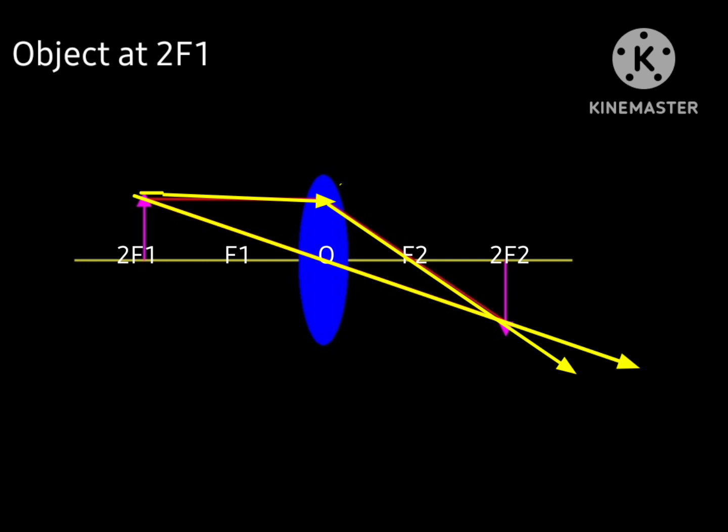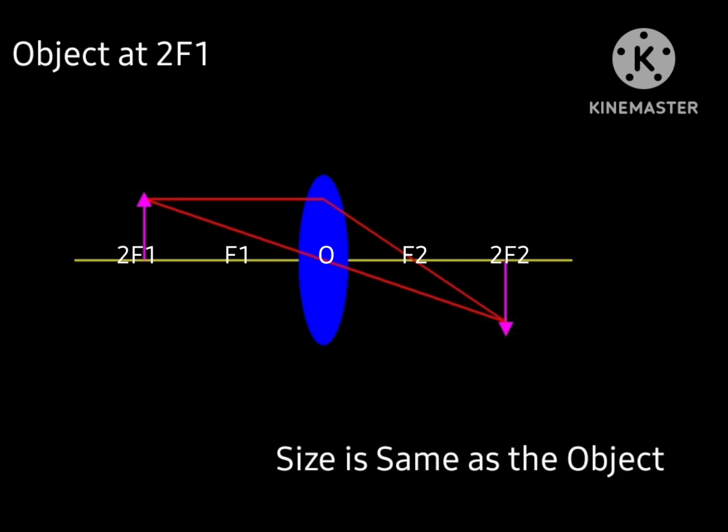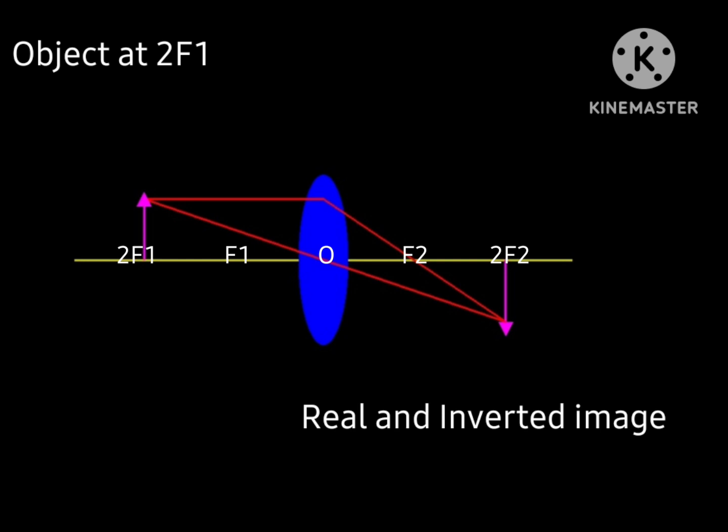After refraction these 2 rays meet at a point where we find the image of that object. Now we found the image is formed at 2F2 and the size of that image is same size as that of the object. Nature of the image is real and inverted.